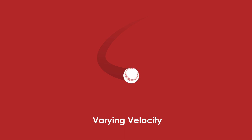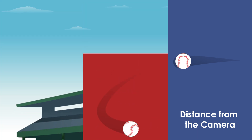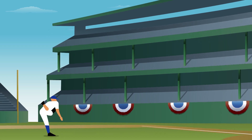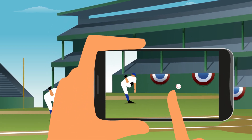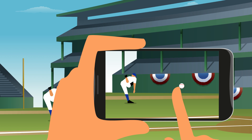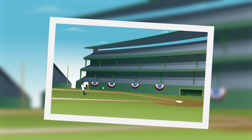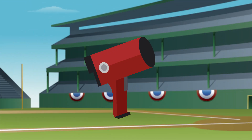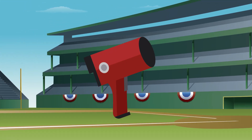They captured pitches of varying velocity, distance from the camera, and frame rate in order to get a data sample large enough to train their algorithm. The team used several variables to train their algorithm, including information from the smartphone slow motion video capturing the pitch and the picture capturing both the pitcher and home plate.